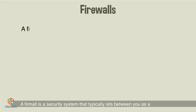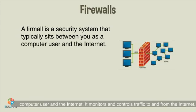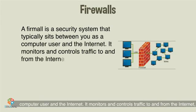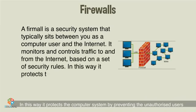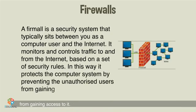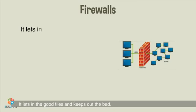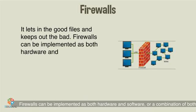Firewalls: A firewall is a security system that typically sits between the computer user and the Internet. It monitors and controls traffic to and from the Internet based on a set of security rules. In this way, it protects the computer system by preventing unauthorized users from gaining access to it — letting in the good files and keeping out the bad. Firewalls can be implemented as both hardware and software, or a combination of both.